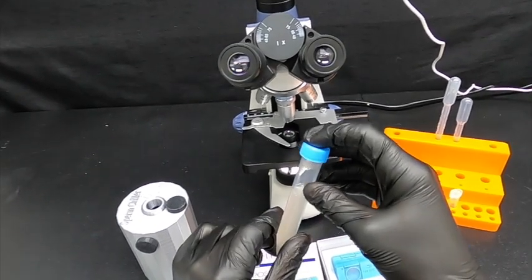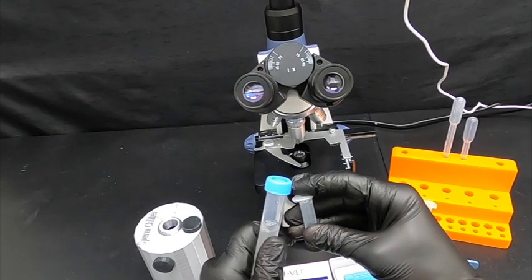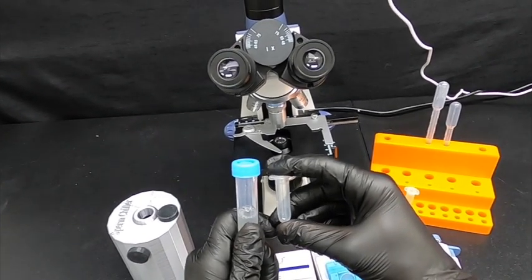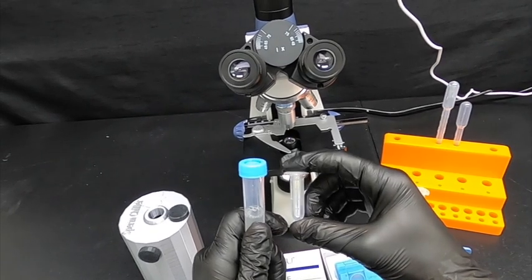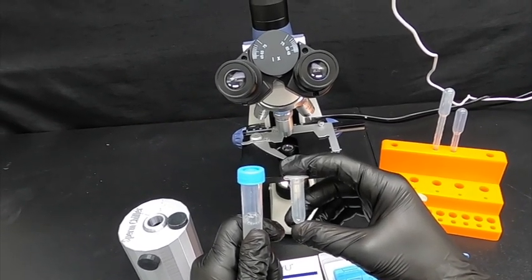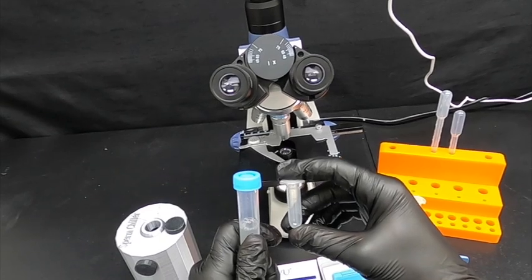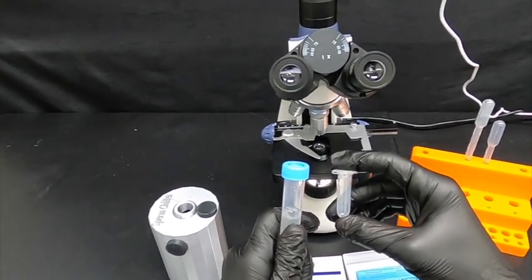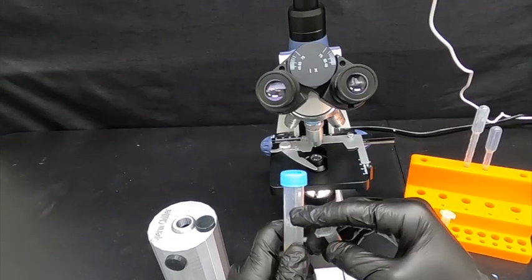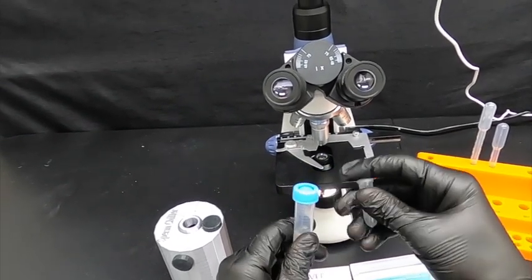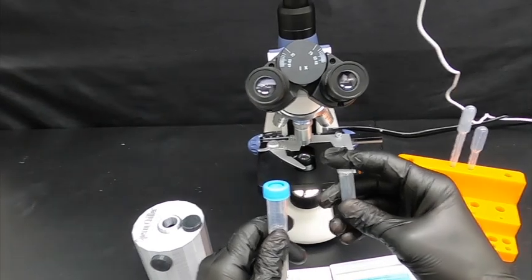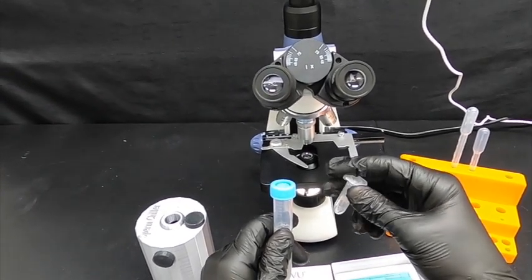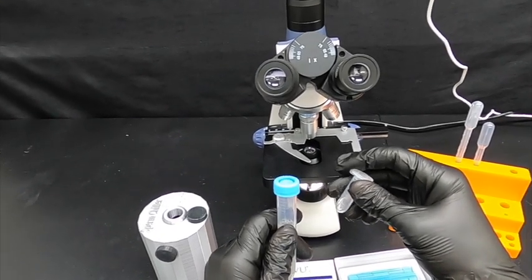What we're going to do here is transfer some of the sample into a different tube. We're killing off or harming the semen enough so they're not moving, so we can get a good concentration count. Again, you do not want to do this to your full sample, just a small portion. The count is most accurate when the sperm are not moving but staying in one place.